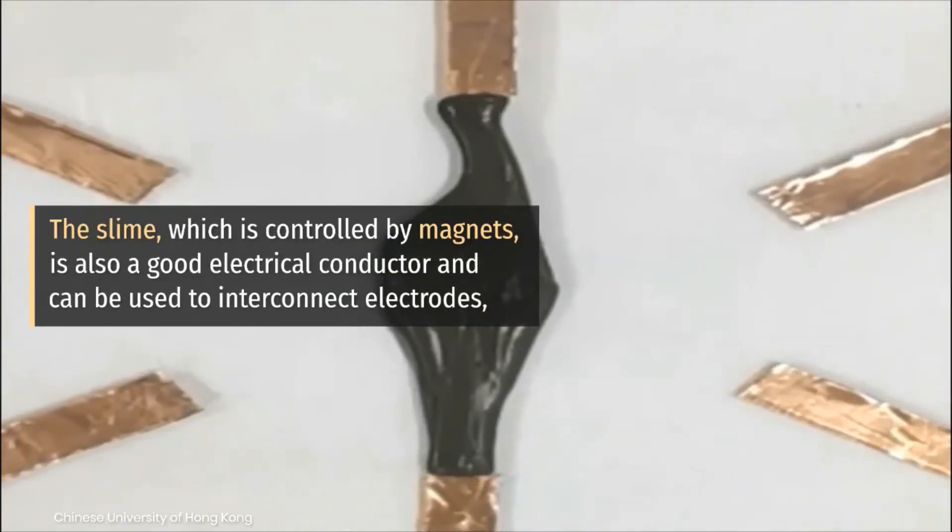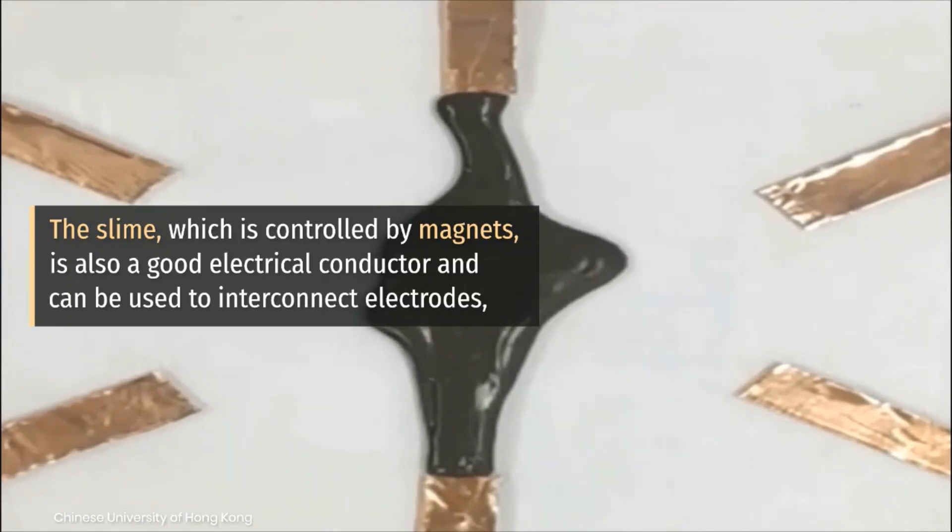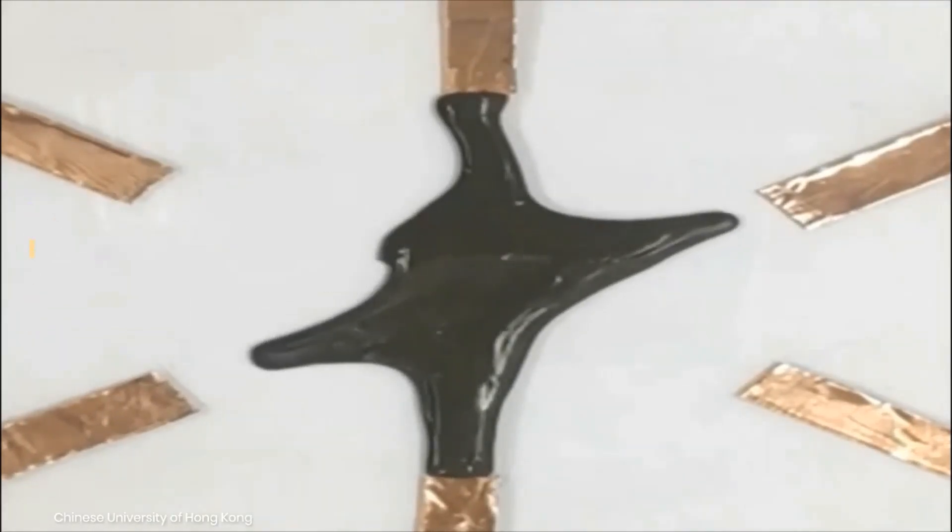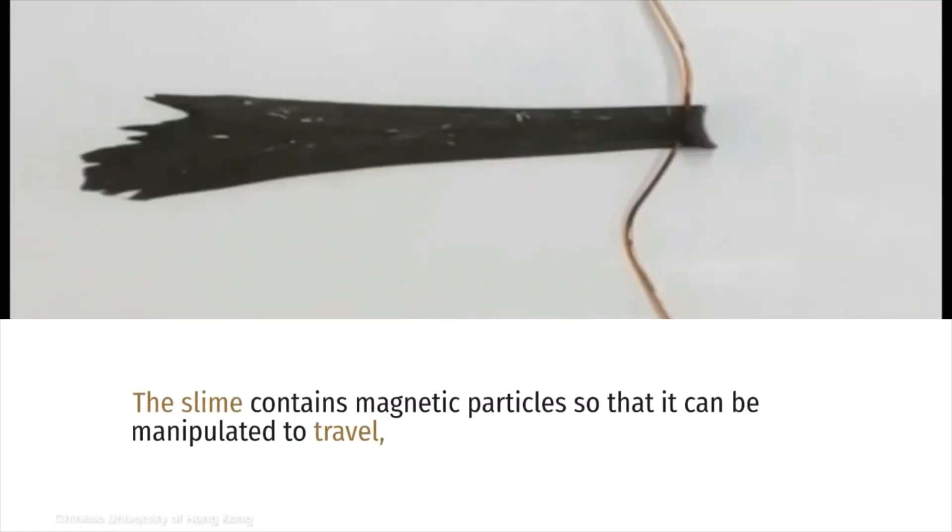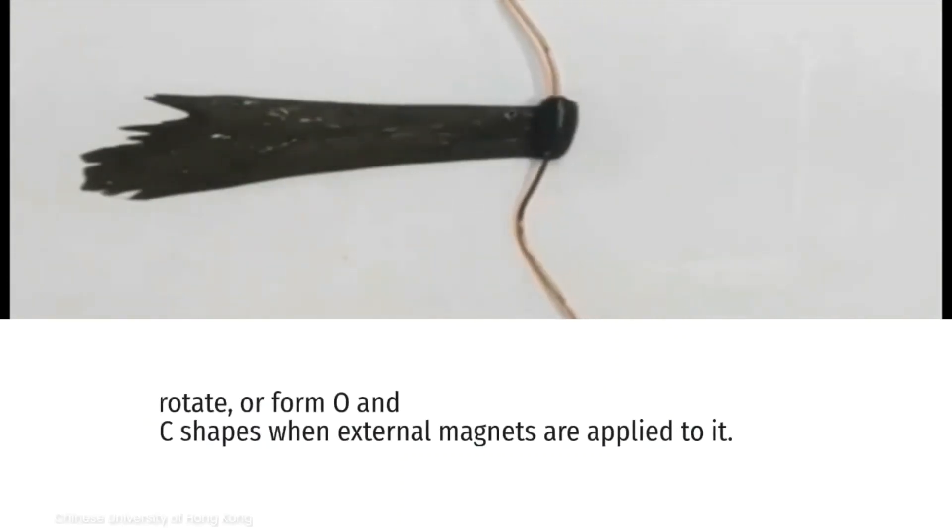The slime is also a good electrical conductor and can be used to interconnect electrodes. It contains magnetic particles so that it can be manipulated to travel, rotate, or form O and C shapes when external magnets are applied to it.